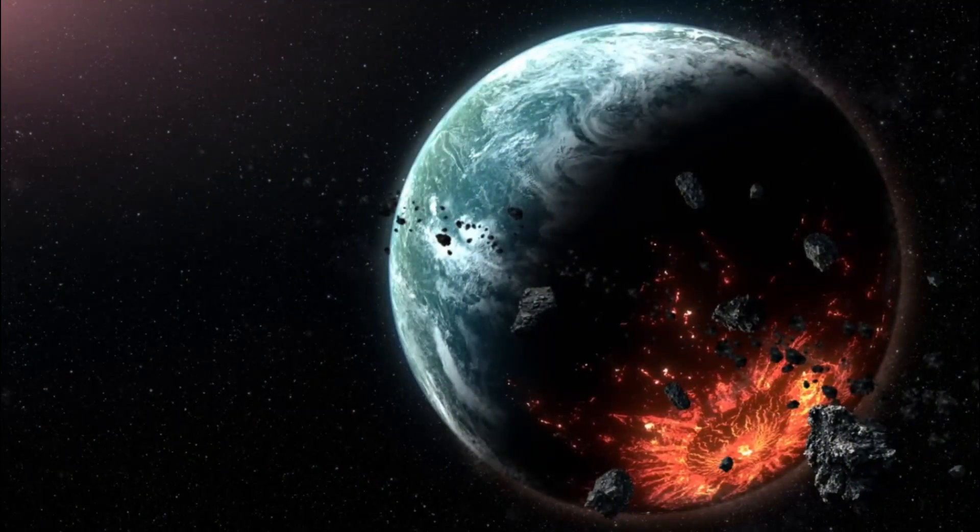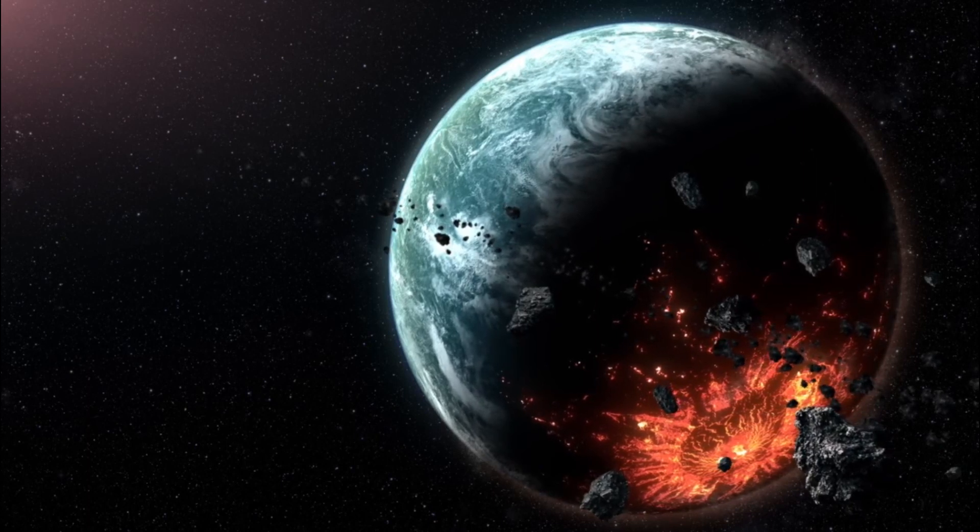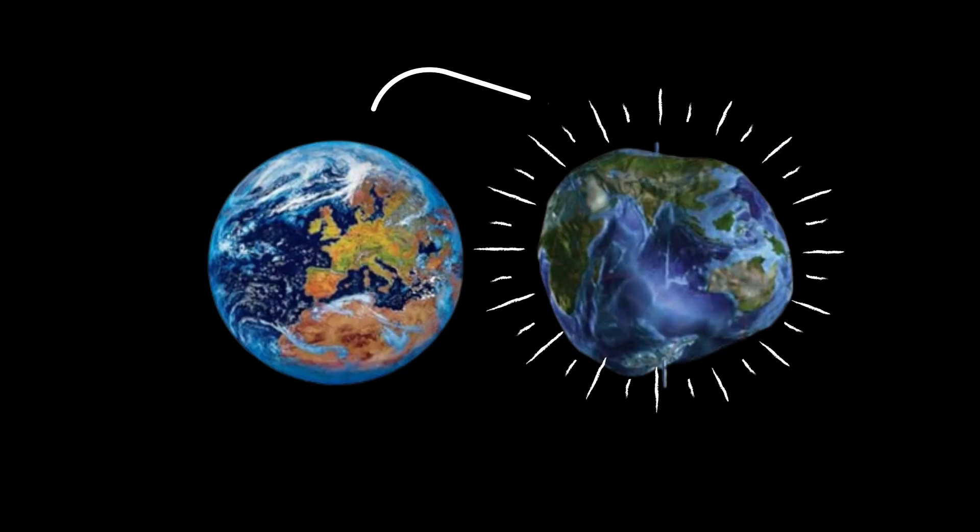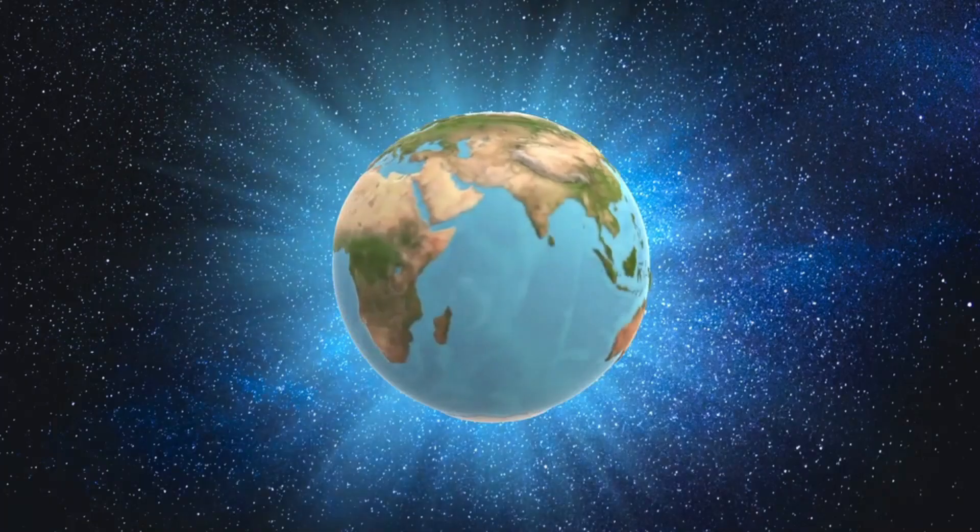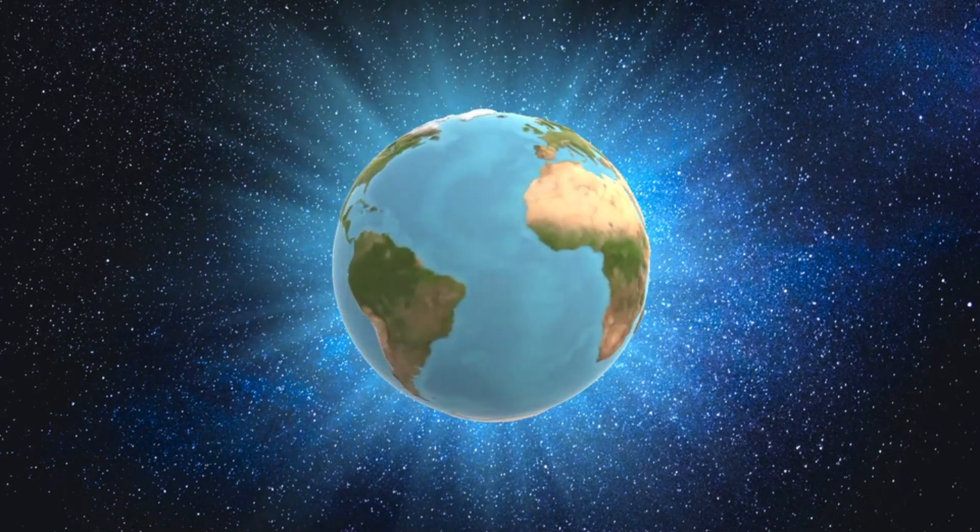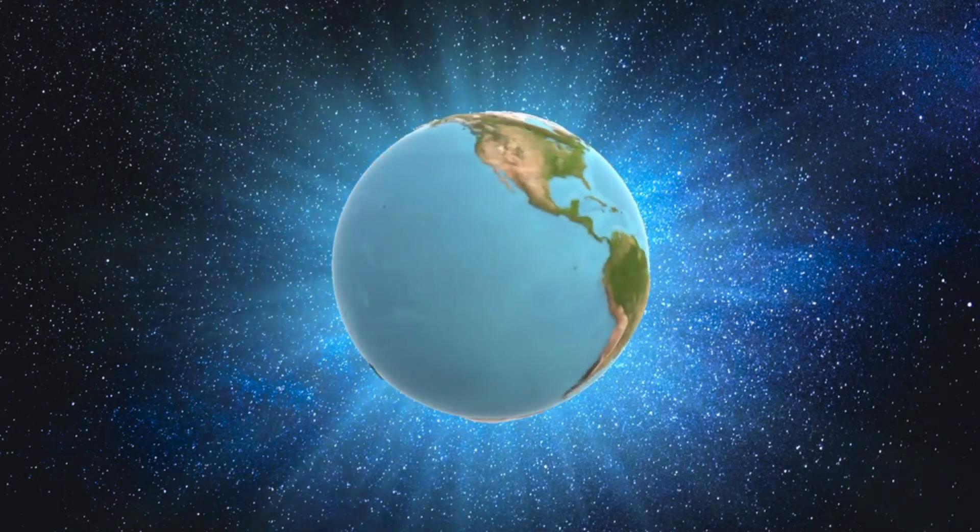Due to the centrifugal forces created by the spinning of the Earth, our planet is not a perfect sphere. It has been slightly flattened at the poles and expands around the equator. Earth would eventually take on a more spherical shape if its rotation were to stop abruptly.